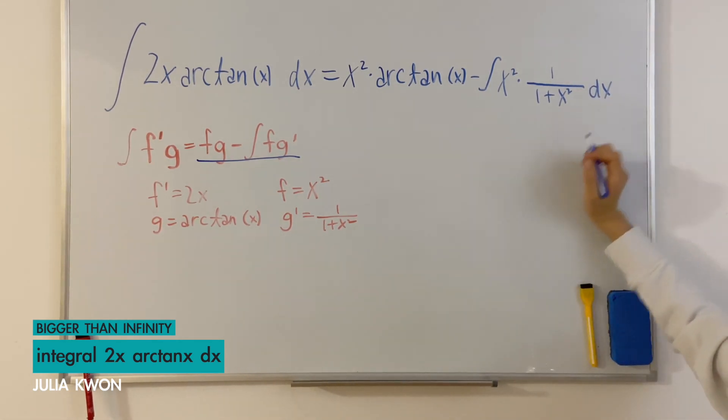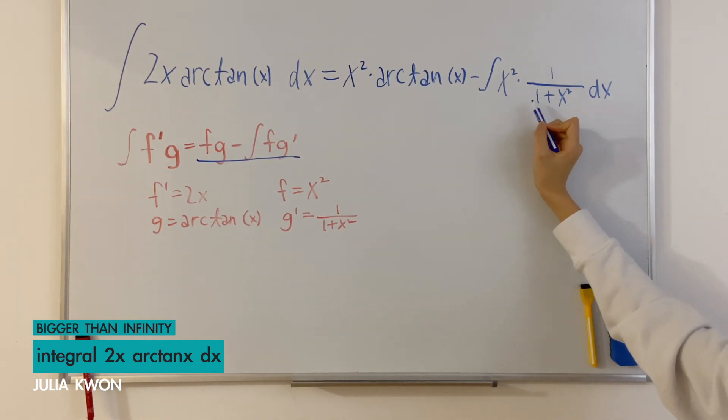Now let's just set this aside and try to solve for the integral of x squared times 1 over 1 plus x squared dx.